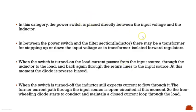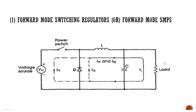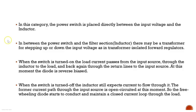In this category, the power switch is placed directly between the input voltage and the inductor. Between the power switch and the filter, there may be a transformer for isolation, stepping up or stepping down the input voltage — as in transformer-isolated forward regulators. There are two conditions to consider: when the switch is on and when the switch is off.